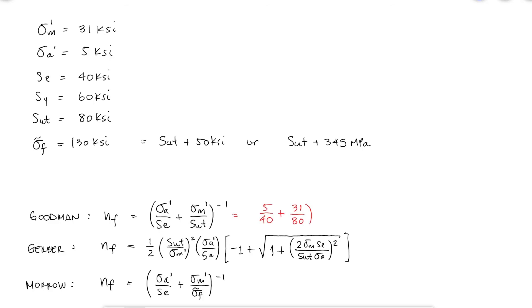Substituting the values in our expressions, we find that the Goodman factor of safety is 1.95, 2.2 for Gerber, and 2.75 for Morrow.